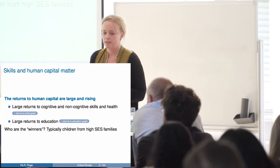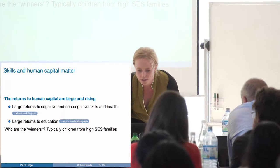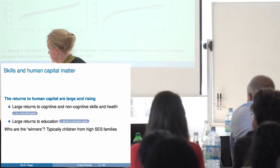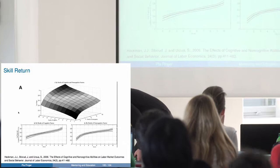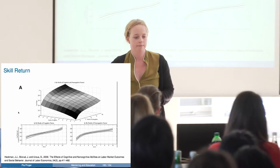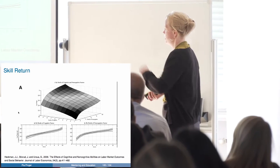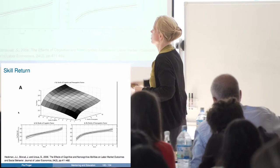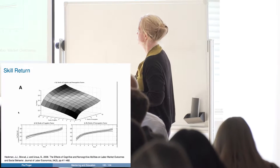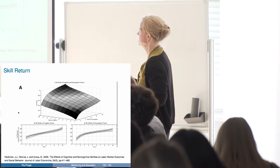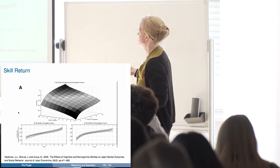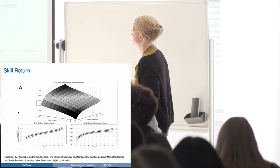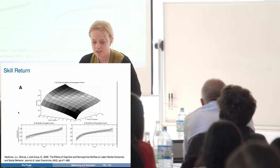So what's the motivation? First of all, we know that there are large returns to cognitive and non-cognitive skills and also health. This is the 2006 paper by Heckman and co-authors. On the axes you have non-cognitive skills and cognitive skills, and on the y-axis you see log wages. There's quite a substantial impact — if you translate the log wage into hourly wages, you can see that as you move someone from the lowest to the highest level of cognitive and non-cognitive skills, the wage almost doubles.